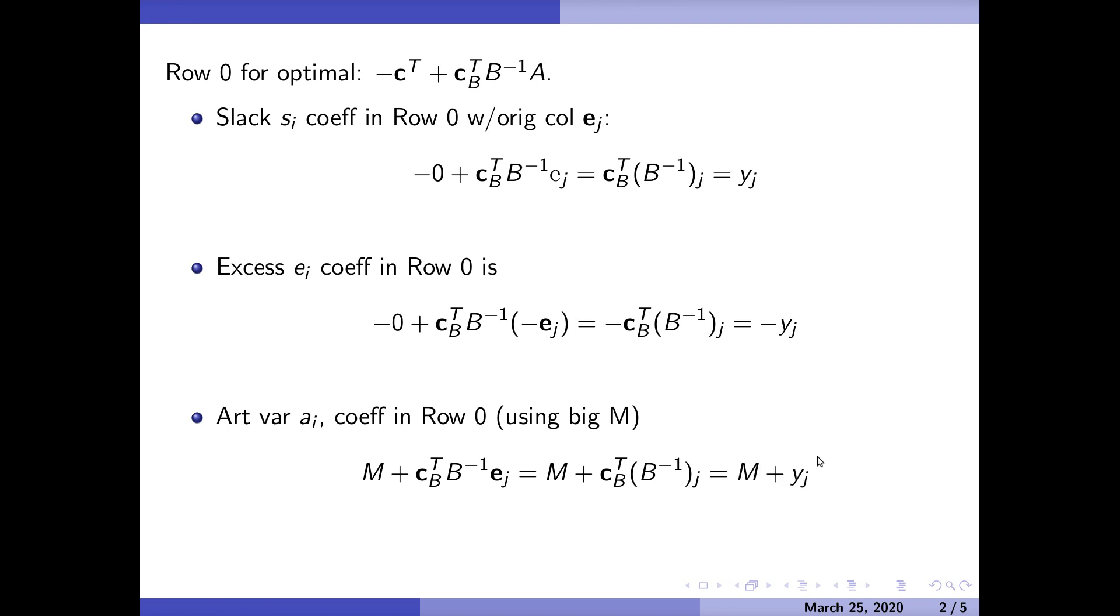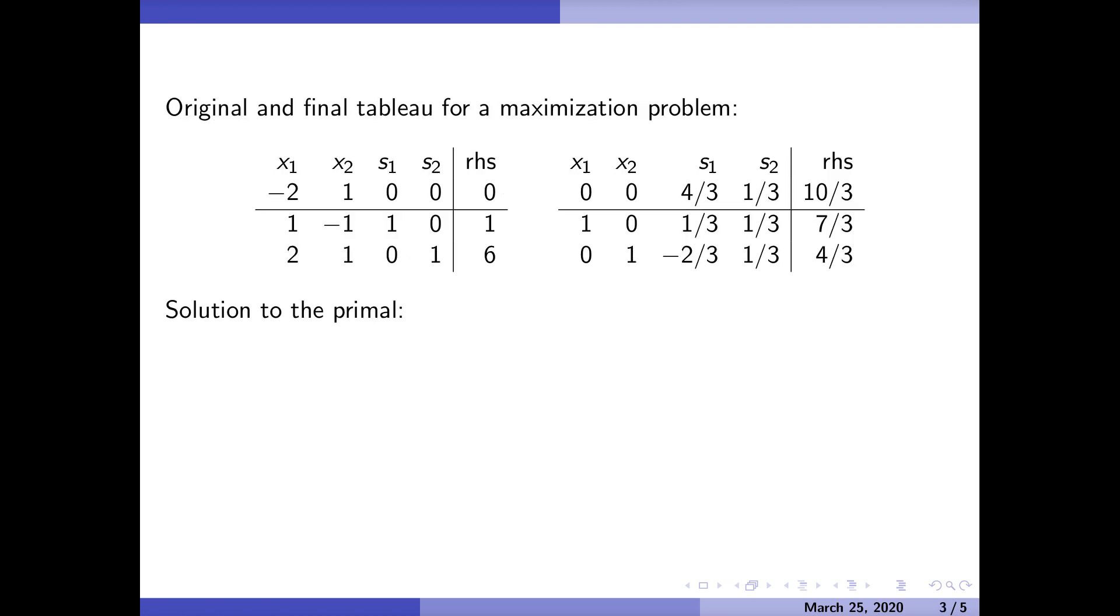Let's take a look at some examples. Here's a couple of examples. This is the original tableau - it is our normal max problem - and here is the solution. This is our final tableau. We see that x_1 and x_2 form the basis for the primal. So the solution to the primal we can just read off there: 7/3, 4/3, with z equals 10/3.